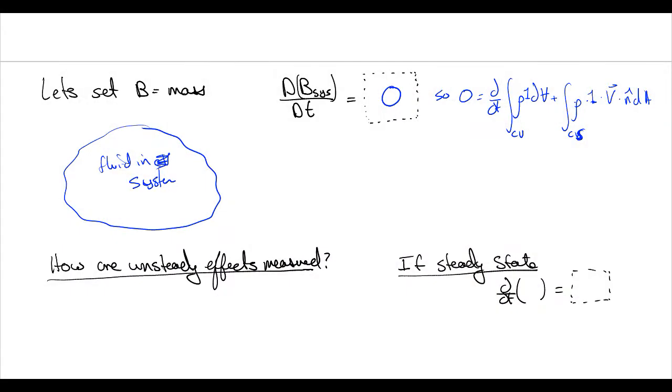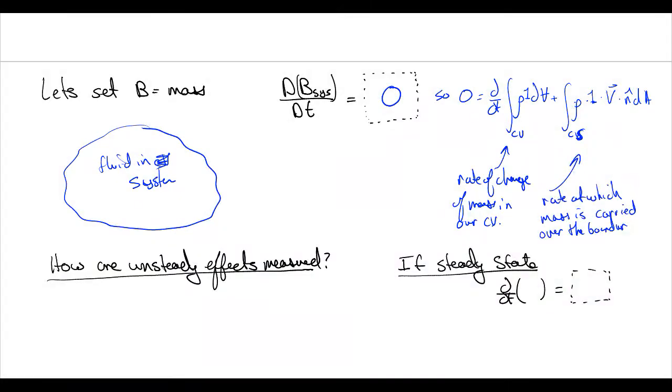So this is the rate of change of mass in our control volume, and this is the rate at which mass is carried over the boundary. And that can be either positive, both of these can be positive or negative.